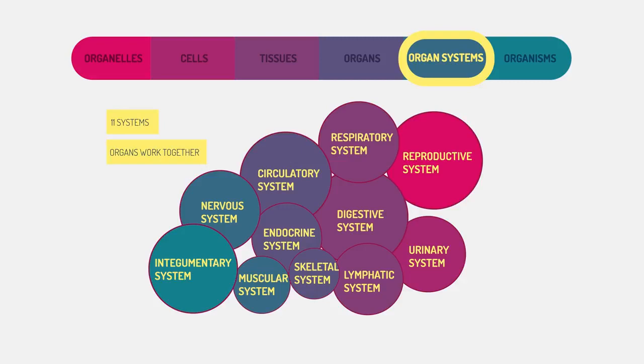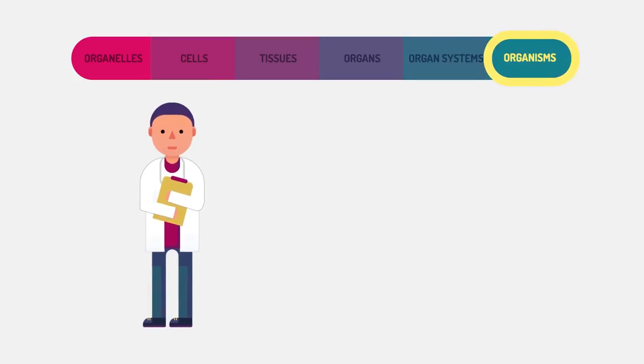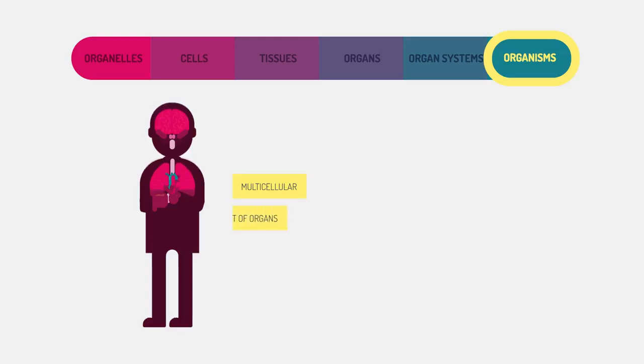Organ systems keep the body regulated and in a stable state. The human body has 11 organ systems. Organisms are entire living things that can carry out all basic life processes. Multicellular organisms are made up of organ systems, but unicellular organisms, such as bacteria or protists, are made up of one cell. So these are the levels of organization in multicellular organisms.